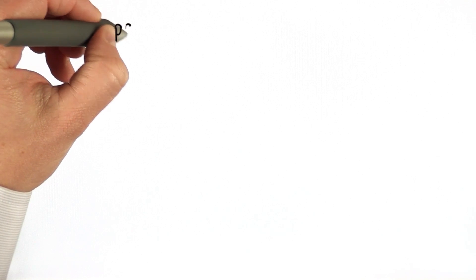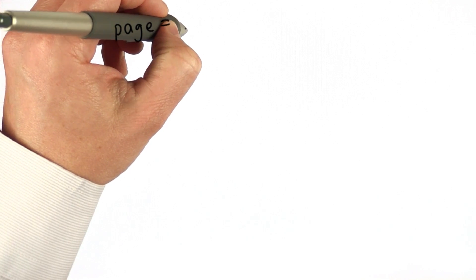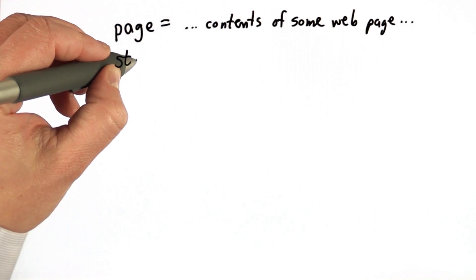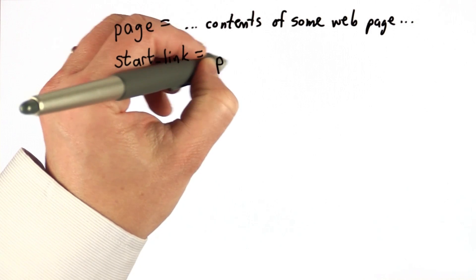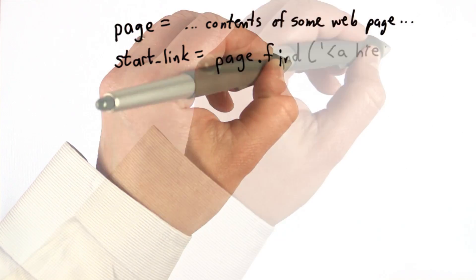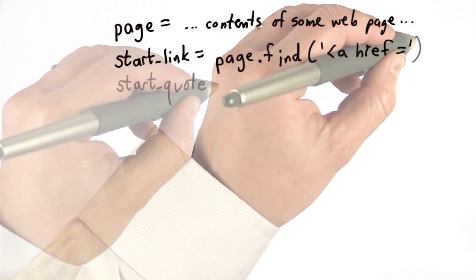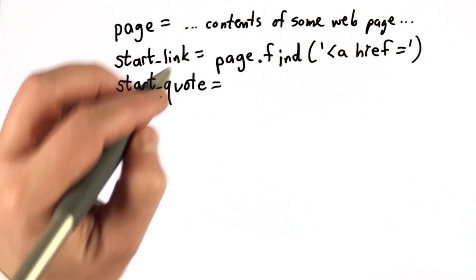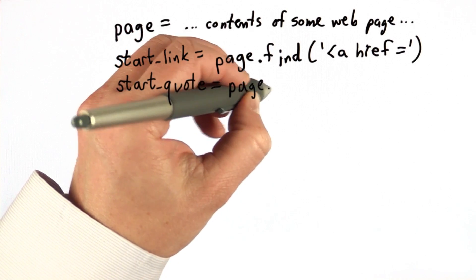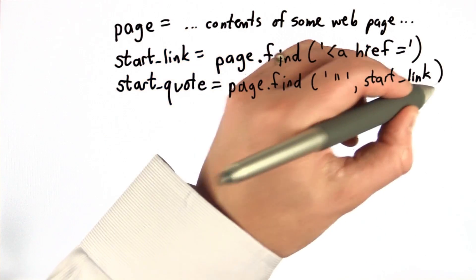So let's remember the code we had at the end of Unit 1. We solved this problem of extracting the first URL from the page. We assumed the page was initialized to the contents of some web page. We initialized the variable start link to the result of invoking find on page, passing in the start of a link tag. Then we initialized the variable start quote to the result of finding in the page, the first quote following that link tag.